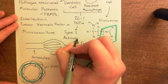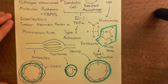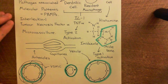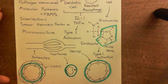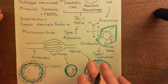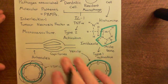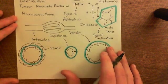Type 1 activation of endothelial cells happens quicker — in a few minutes — whereas type 2 activation takes hours. They trigger very similar, almost identical results, but the way they do it is different. Type 1 activation doesn't involve any changes to gene expression, whereas type 2 activation does involve changes to gene expression.